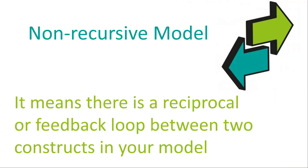So we're going to talk a little bit about non-recursive models and what that means exactly. If you have a non-recursive model, it means you have a reciprocal relationship between two constructs — A leads to B and B leads to A. In essence, you have a feedback loop between those two constructs where they're influencing each other. There are some challenges with non-recursive models that you don't really have with recursive models, which have no feedback loops.